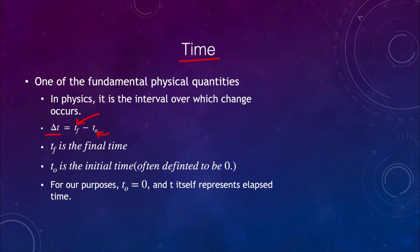We generally define the initial time to be zero, so the initial time will usually be zero. That means that t is representing the elapsed time — as though you're starting a stopwatch and stopping it, you're always starting things at time equals zero. That's not necessary, but it does make things simpler.